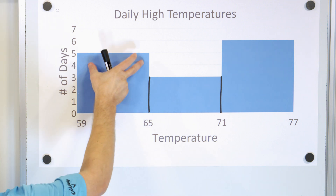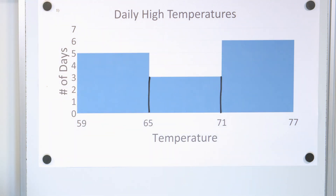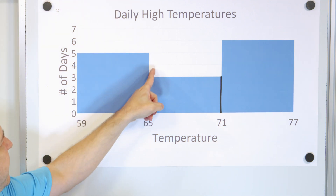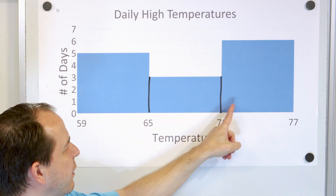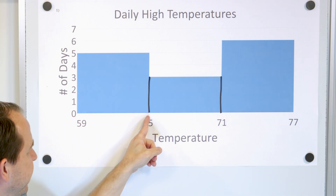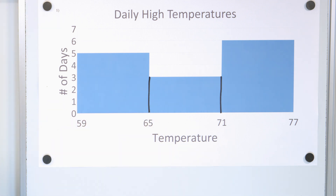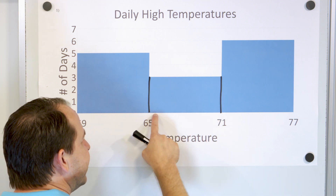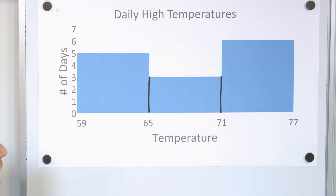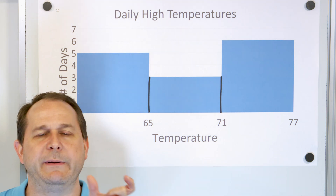So this one goes up to five days, this one goes up to three days, and this one goes up to six days. Now let's take a look at the numbers along the bottom. Notice that the numbers are only on the edges — where one bar starts and the other begins. We have 59 to 65 degrees, a difference of 6 degrees. Then 65 to 71 degrees, again 6 degrees wide. And 71 to 77, again 6 degrees wide. For a histogram, you want the ranges of numbers along the bottom to always be the same width.